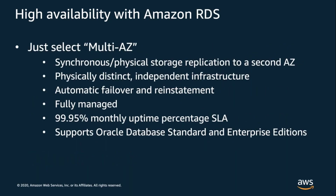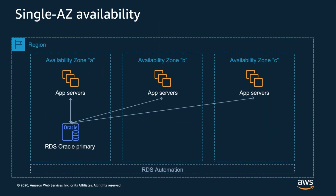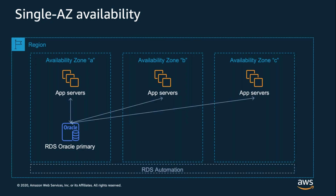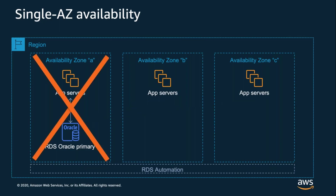RDS provides high availability with the multi-availability zone option. Multi-AZ configurations synchronously replicate your data to separate infrastructure in a second AZ. The configuration is continuously monitored and failover happens automatically, typically taking a minute or two. This allows us to offer a 99.95% uptime SLA. Because we're replicating at the storage layer, this works with both standard edition as well as enterprise edition. In a single AZ configuration, if the compute node fails or the database crashes, RDS automation takes care of getting things back up and running, usually within a few minutes.